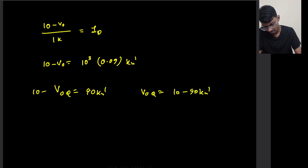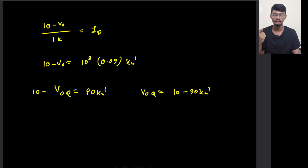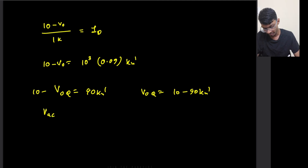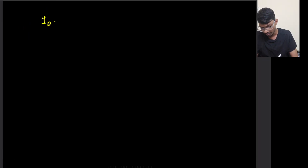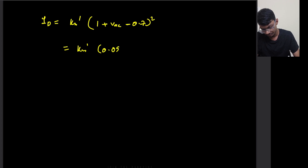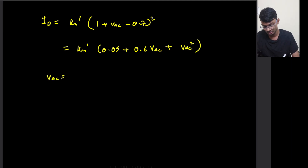Now let's calculate how the output current looks when a small signal V_ac is applied at the input. I_D = Kn' · (1 + V_ac − 0.7)² = Kn' · (0.3 + V_ac)², which expands to Kn' · (0.09 + 0.6·V_ac + V_ac²). Here V_ac = 0.25·sin(ωt).